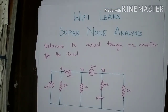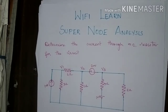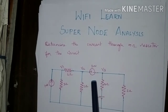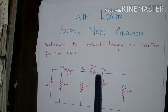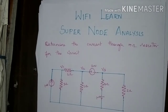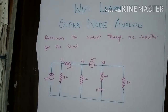A super node is formed when there is an ideal voltage source between any two nodes of the electrical circuit. In this problem, this 20V voltage source is an ideal source which appears between two nodes of the circuit. We can form a nodal equation by using KCL — Kirchhoff's Current Law.